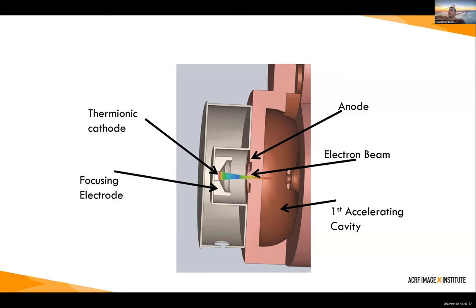Question: does addressing cavity breakdown work through shape or material? Mostly shape. It was previously thought the primary cause of breakdown was very strong electric fields, but they discovered it's actually the magnetic field that seems to be causing it. By redesigning the cavity with that in mind they've been quite successful in boosting the amount of field the cavity can hold.